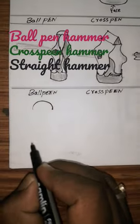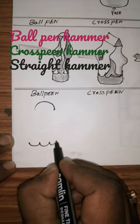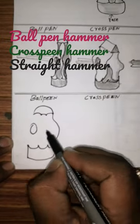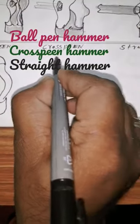Very easy and simple. Draw one circle like this, divide into three parts. Join this one, and join this one. Draw a cross pen hammer.